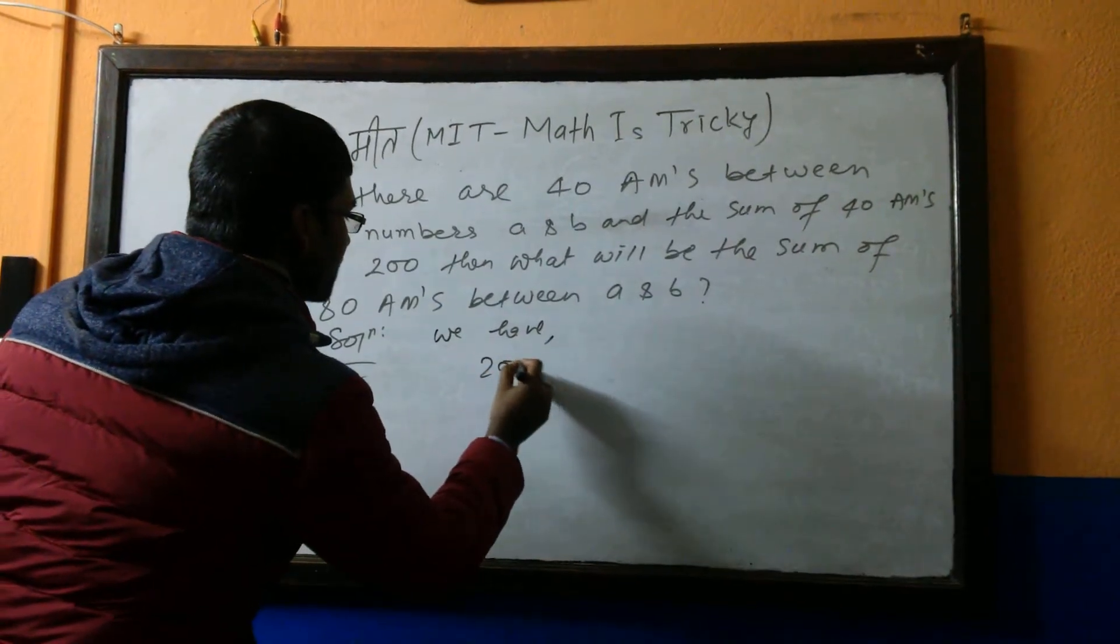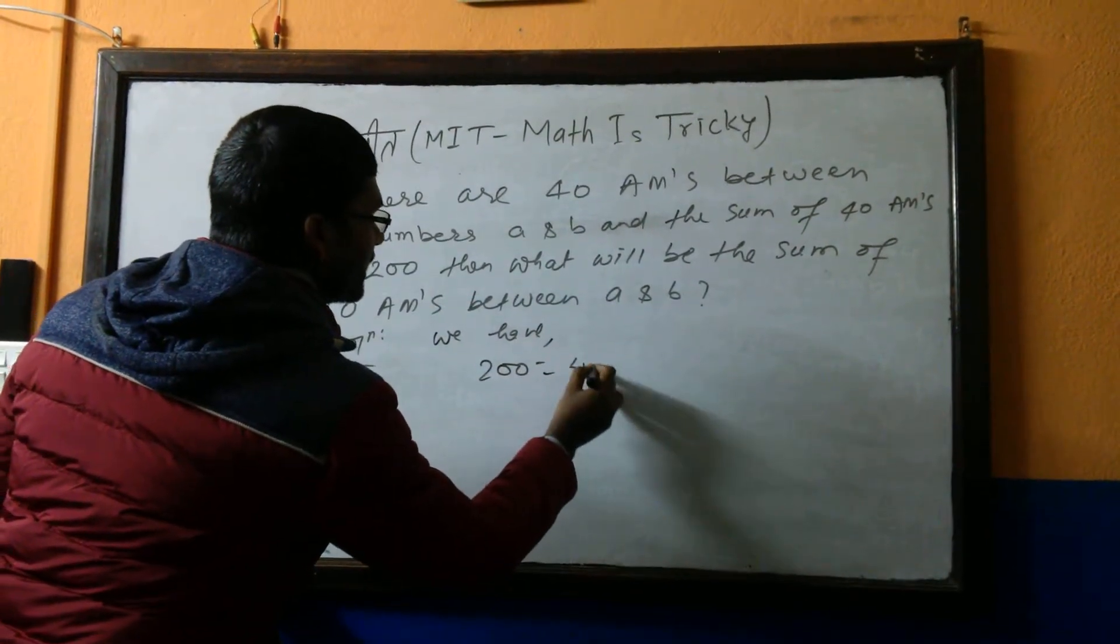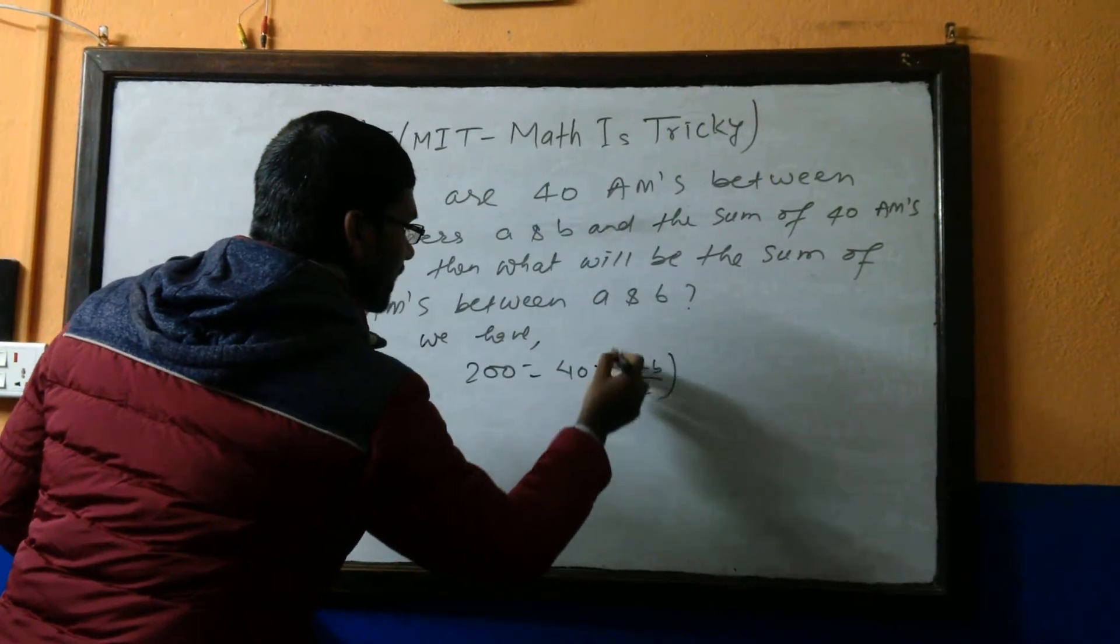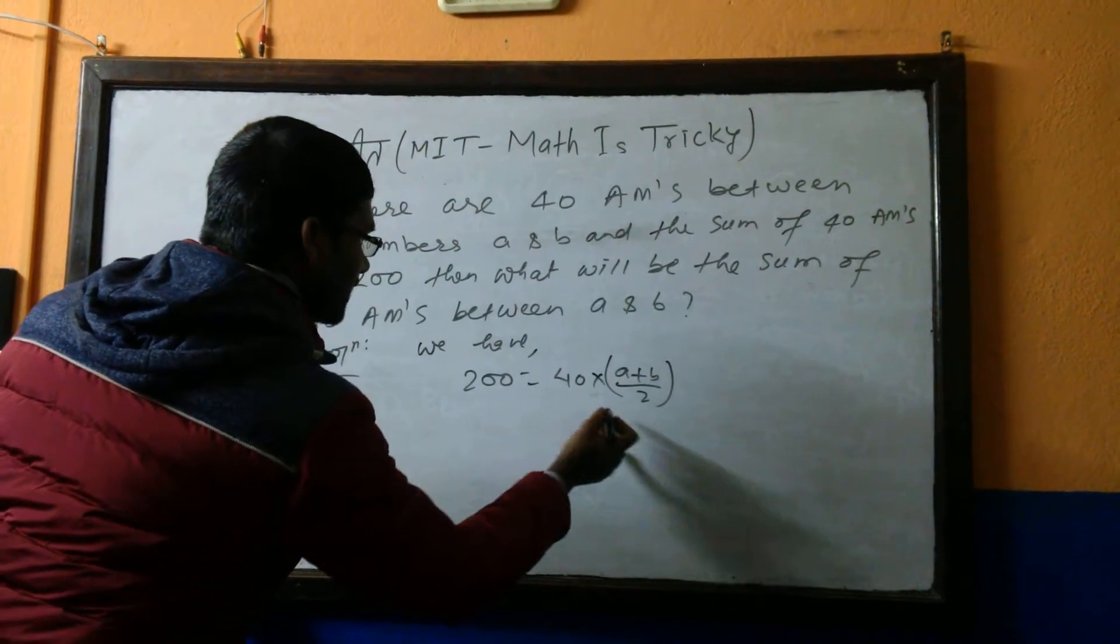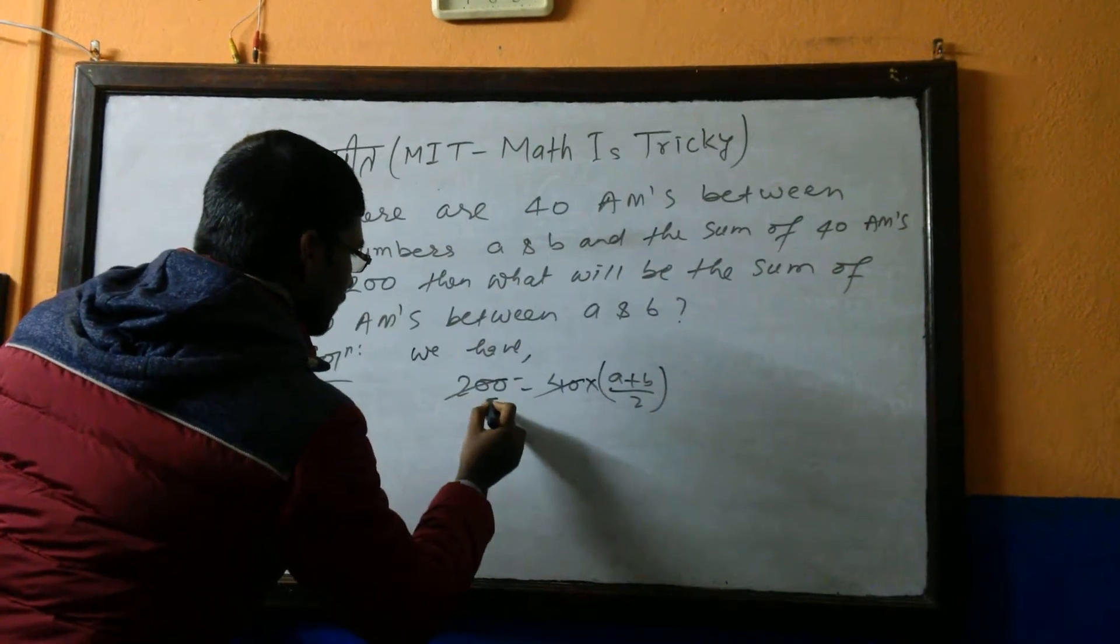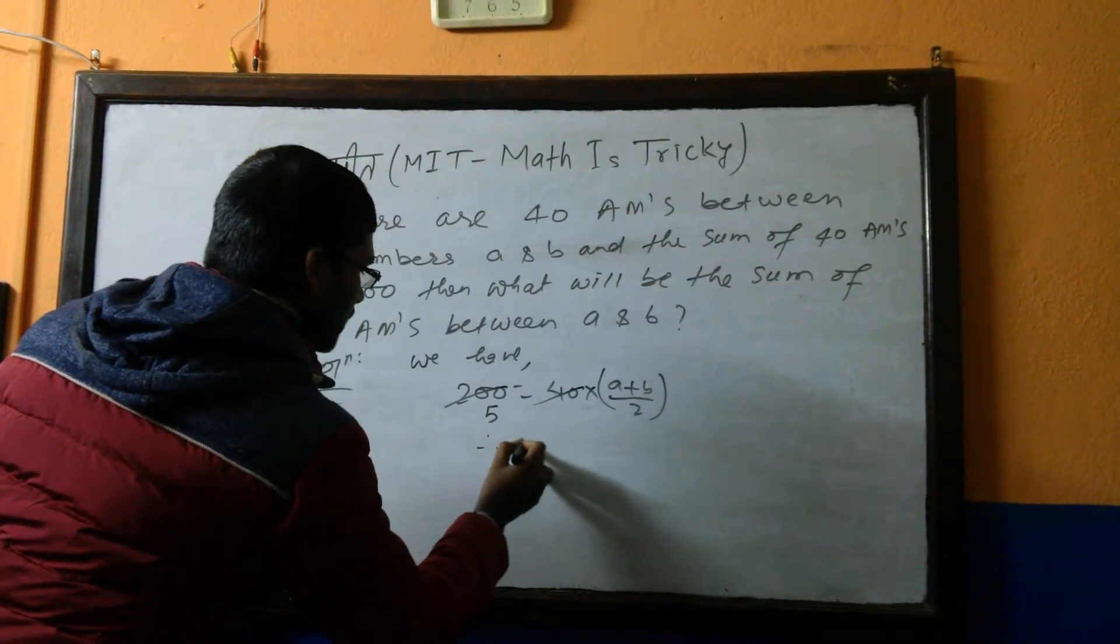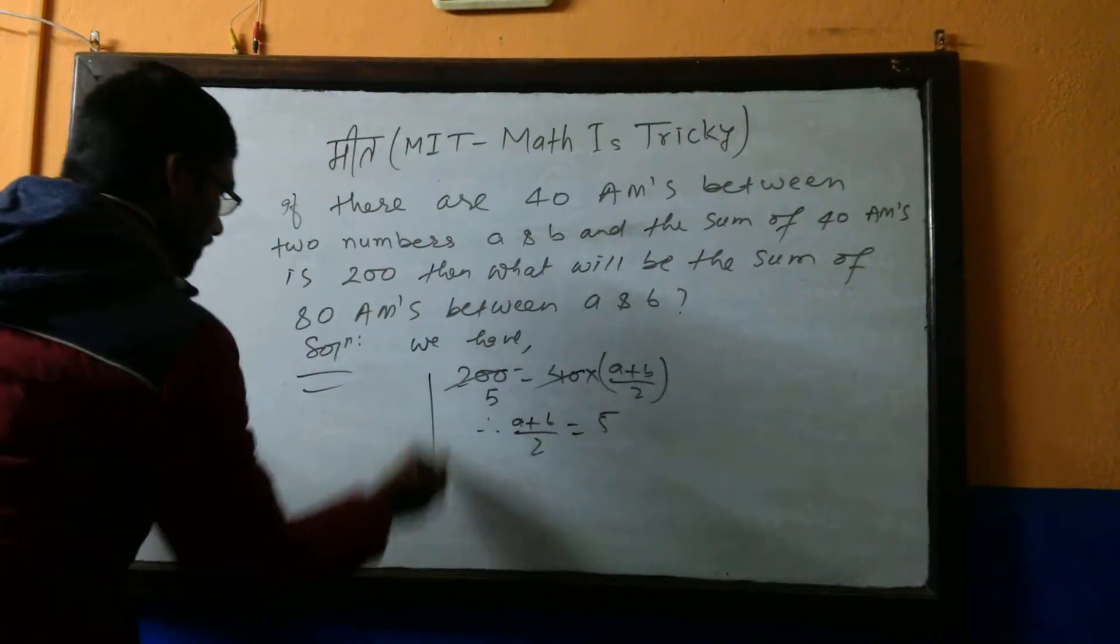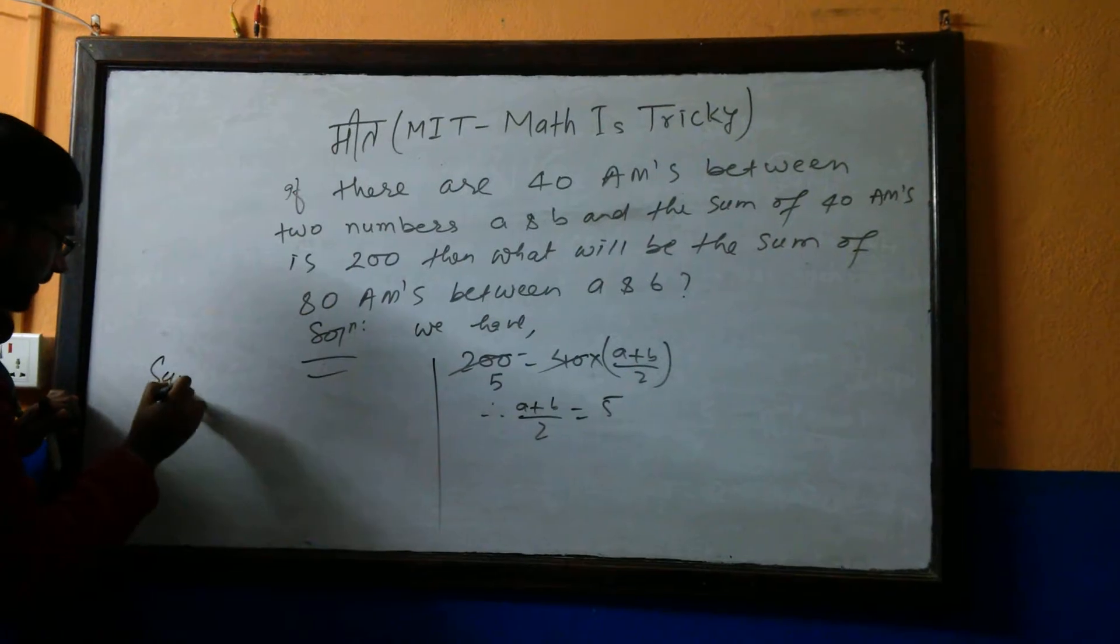200 equals 40 into (a + b) by 2. And from this we get, if we solve here, we get 5. Therefore we got here (a + b)/2 equals 5.